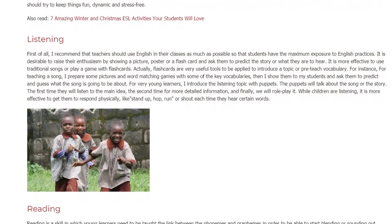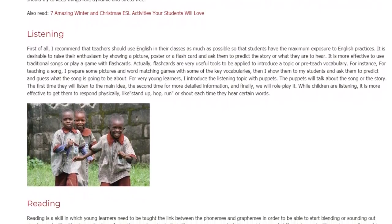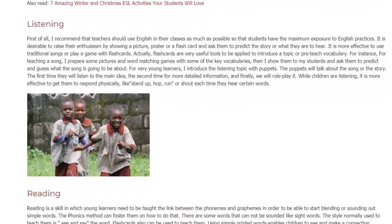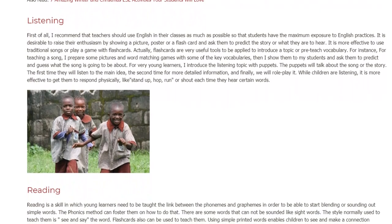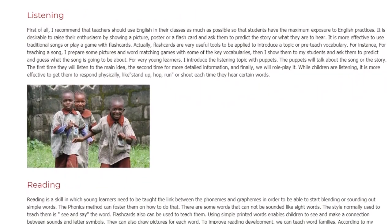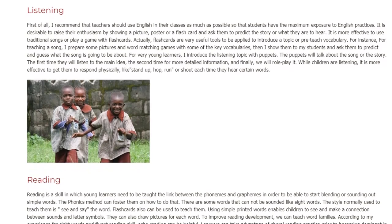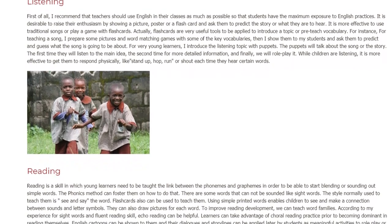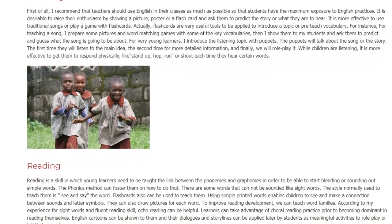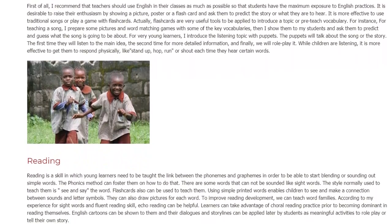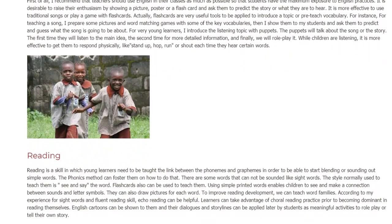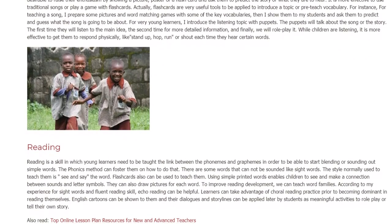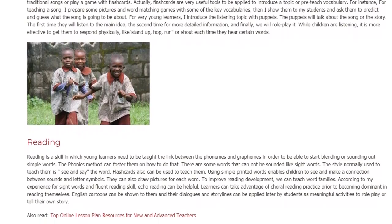Reading: Reading is a skill in which young learners need to be taught the link between phonemes and graphemes in order to be able to start blending or sounding out simple words. The phonics method can foster them on how to do that. There are some words that cannot be sounded out, like sight words. The style normally used to teach them is see and say the word. Flashcards can also be used to teach them. Using simple printed words enables children to see and make a connection between sounds and letter symbols. They can also draw pictures for each word. To improve reading development, we can teach word families.